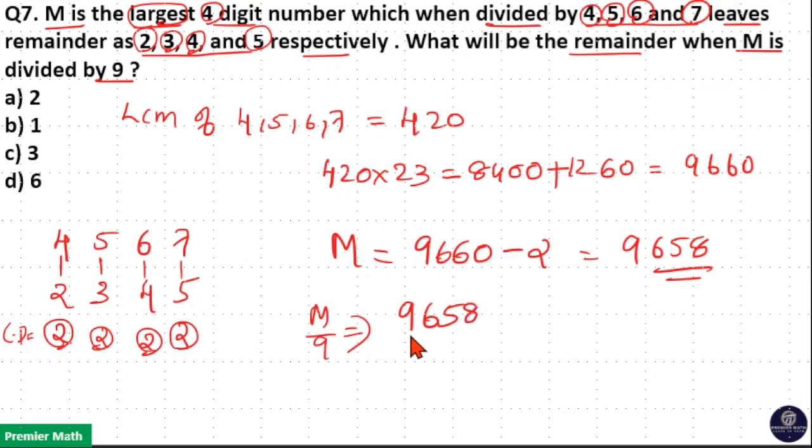When a number is divided by 9, just take the digital sum. So the remainder is the digital sum. Here digital sum is 9 cancel, 8 plus 5 plus 6 is equal to 28.